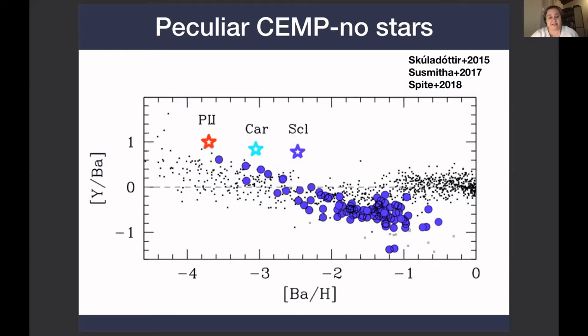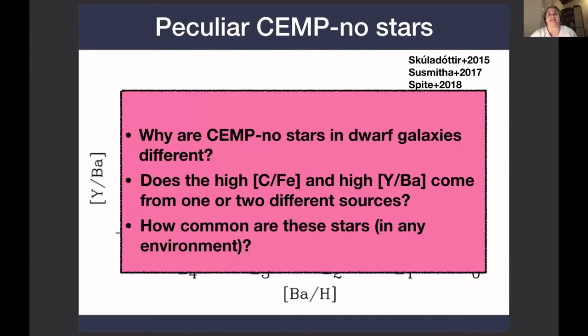And this raises many questions. Why are CEMP-no stars in dwarf galaxies different? This, I don't know. Does the high carbon and high yttrium come from the same source, or are there two separate nucleosynthetic sources? This is still not completely clear.